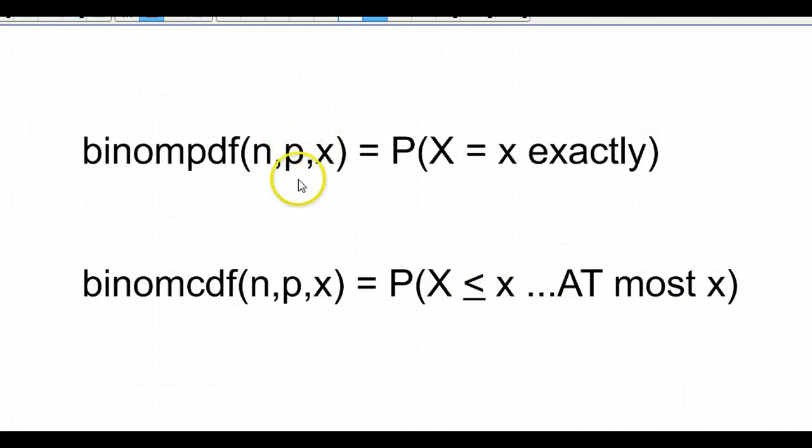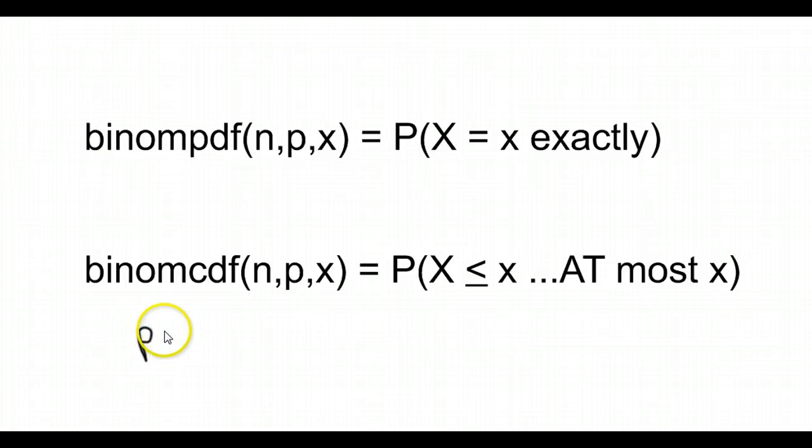So what this always amounts to is the probability of 0, plus the probability of 1, plus the probability of 2, plus the probability of 3, plus the probability of 4, plus forever and ever, until you get to X, where it tells you to stop. So the way that you add this number, whatever you put into the CDF, is where you want to stop when you're adding from 0 all the way up to that number.